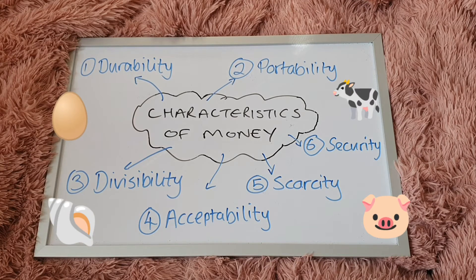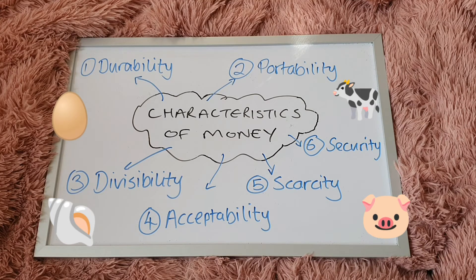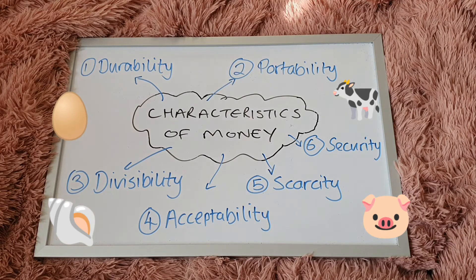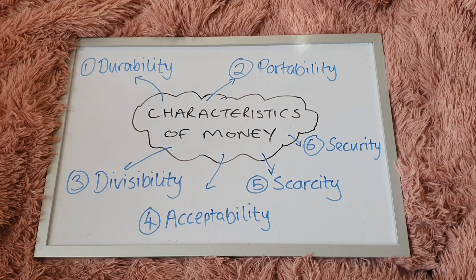Now, look at this, guys. Believe it or not, these used to be different forms of money — eggs, cows, shells, even pigs used to be used back in the past as a form of money. If you think about why these forms are not accepted as characteristics of money today — imagine eggs, they're probably not going to be easy to transfer; portability would be extremely difficult. What's really important is that money now has these six characteristics, so that it helps us make transactions easier and much simpler as well.